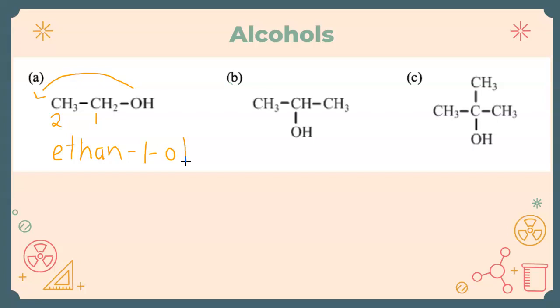So my next example here, my OH is right in the middle. So it doesn't matter what number I give it. I could number it one, two, three, or one, two, three, the opposite way. So I'm going to just go one, two, three this way. My OH is right in the middle. Three carbons means that it's going to be prop. So I'm going to say propan, and then I'm going to put two because it's right in the middle. And then ol on the end.